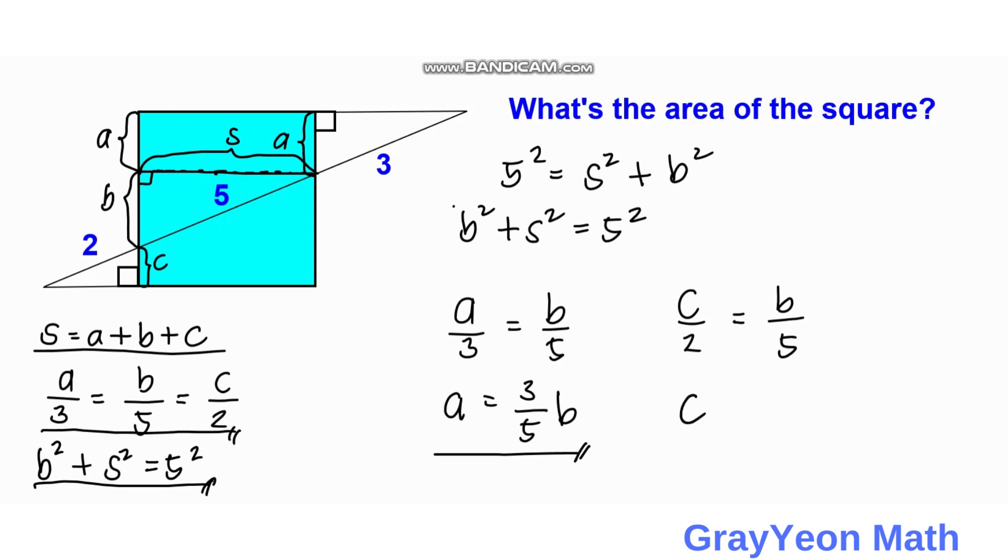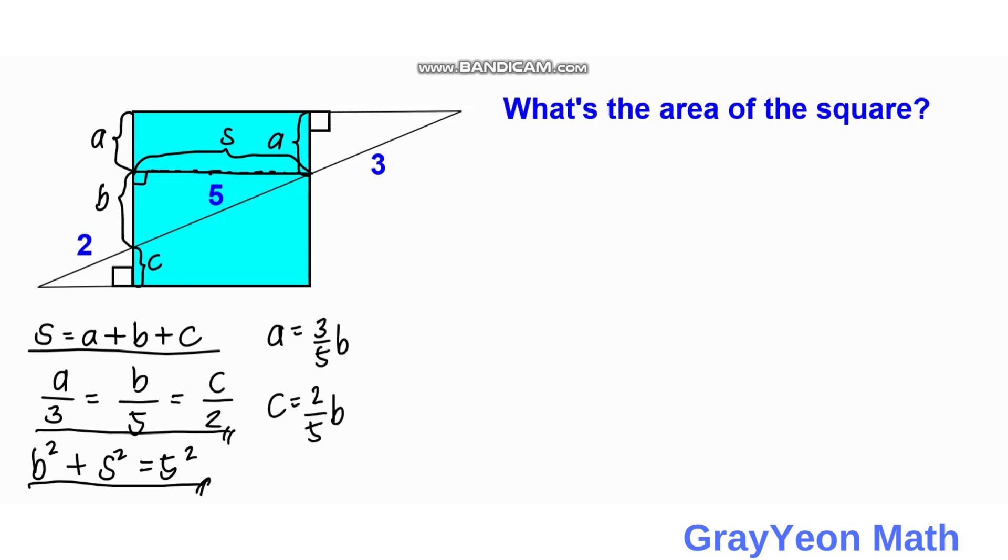Okay, so next we use this equation S is equal to A plus B plus C. And S is equal to, since A is equal to three-fifths of B plus B plus C, which is equal to two-fifths of B, then we have three-fifths plus two-fifths is equal to one. So this becomes B, and we need to add the B here. So we have S is equal to two B.